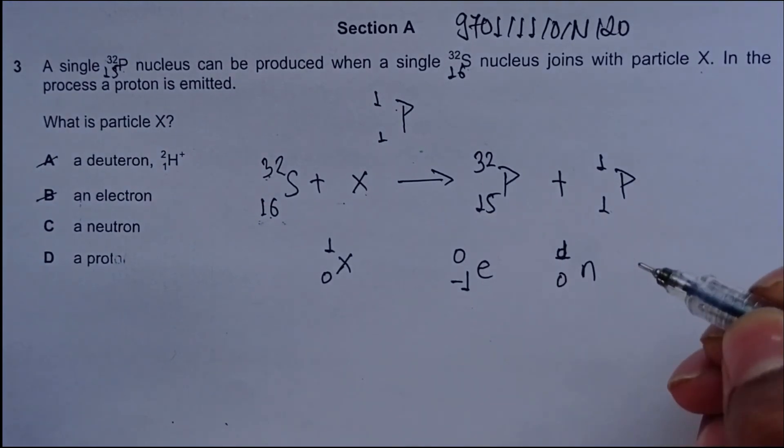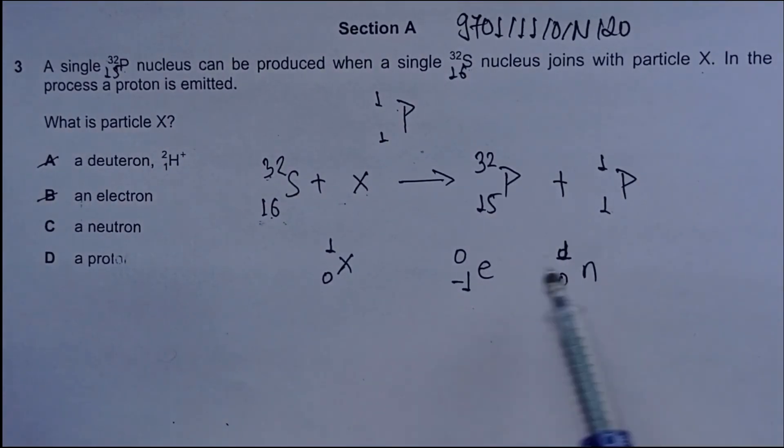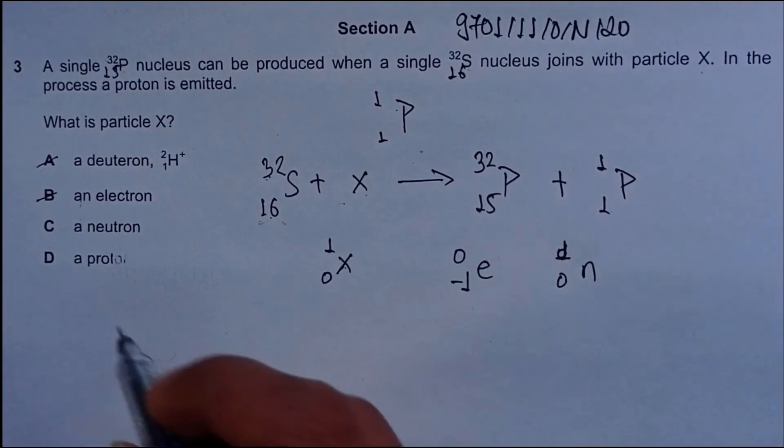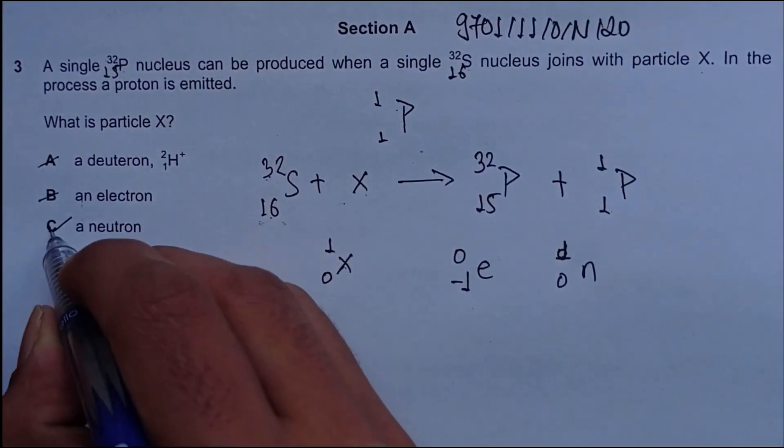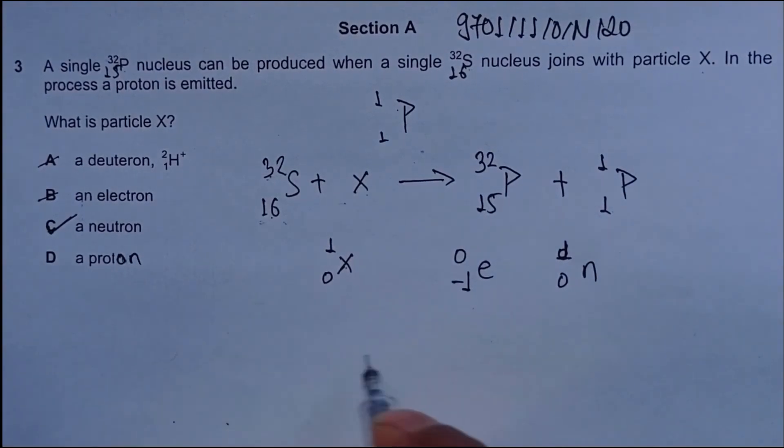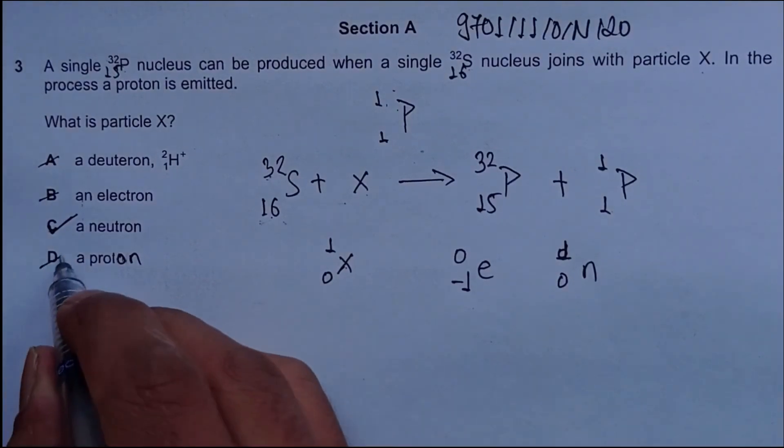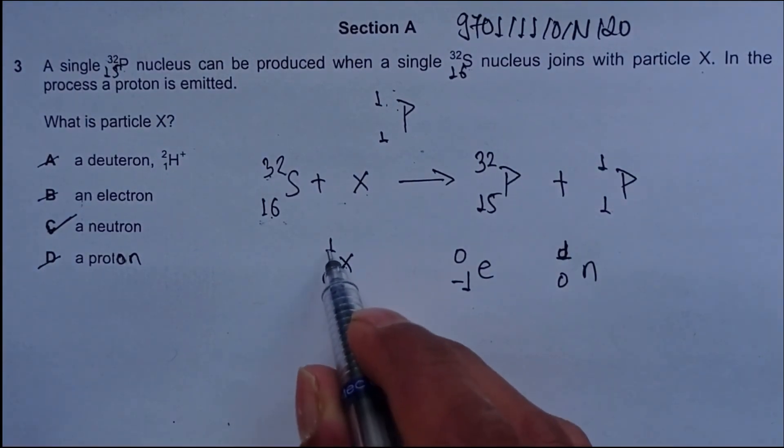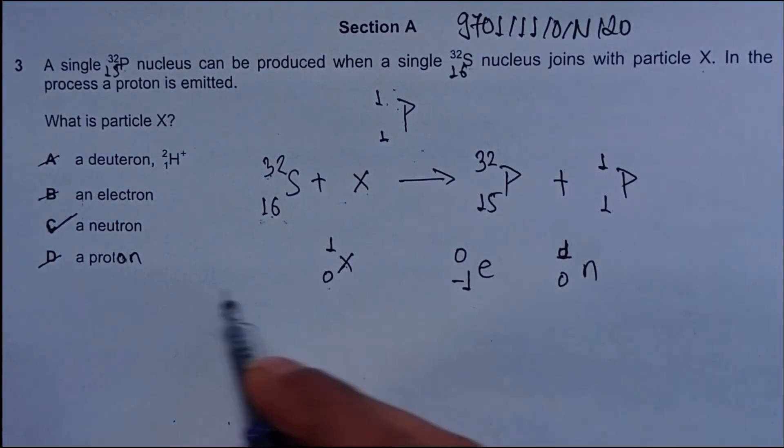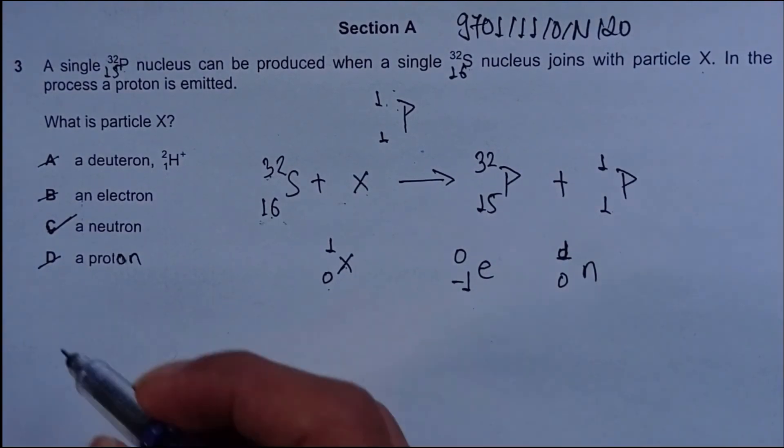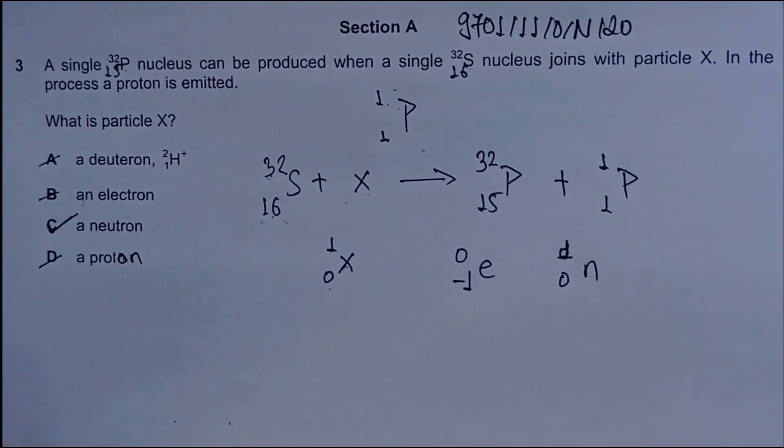X has 1 nucleon and 0 protons, so it should be C. The correct answer should be C. Option D is proton, which has 1 proton and 1 nucleon, so D is also not the correct answer. X has 1 nucleon and 0 protons. Neutron also has 1 nucleon and 0 protons, so choice C is the correct answer.